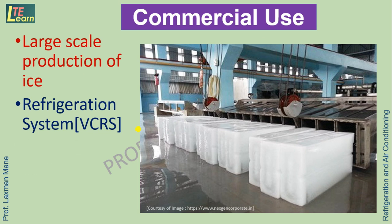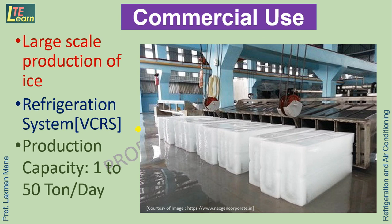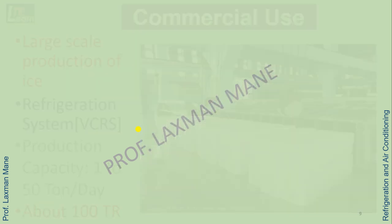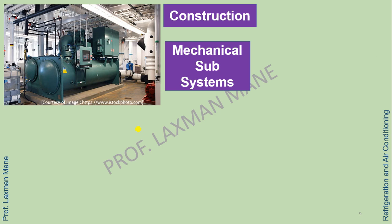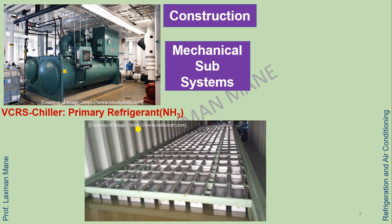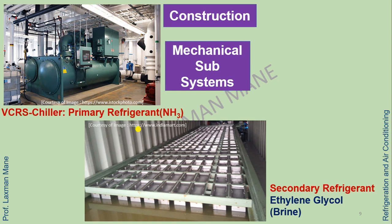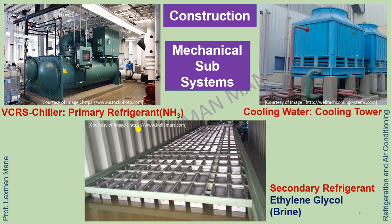Ice plants have a capacity of ice production of about 1 to 50 tons per day and a cooling capacity of about 100 TR. An ice plant consists mainly of three mechanical subsystems: a chiller using ammonia as a primary refrigerant, a brine tank circulating a brine solution of ethylene glycol or sodium chloride as a secondary refrigerant, and a cooling tower using circulation of water as a cooling medium.